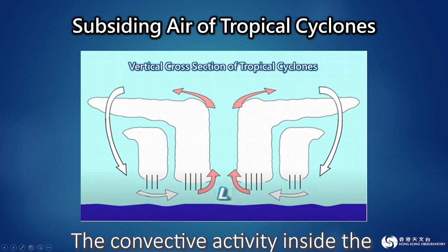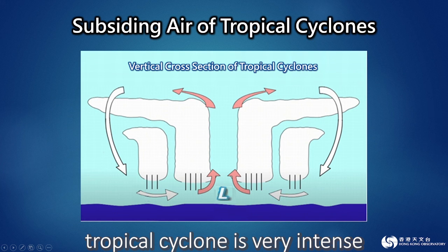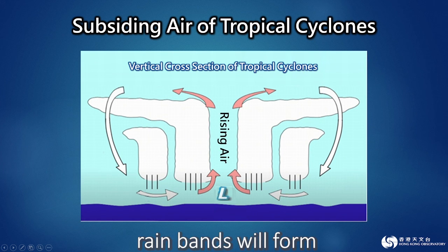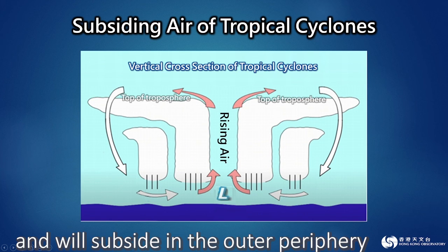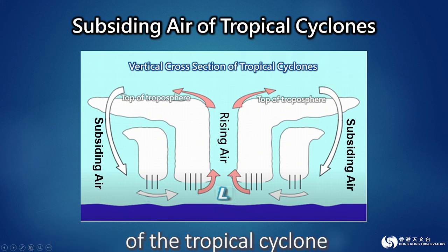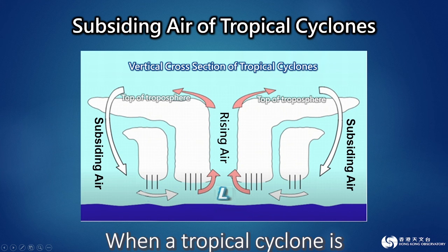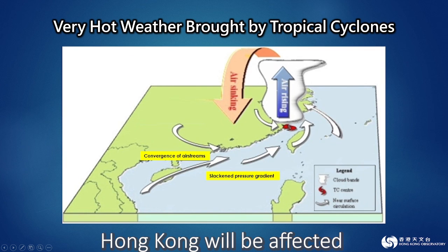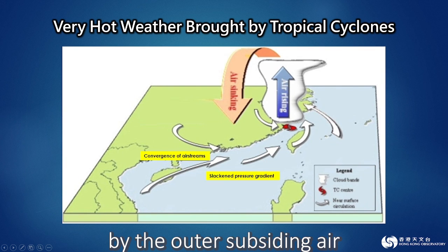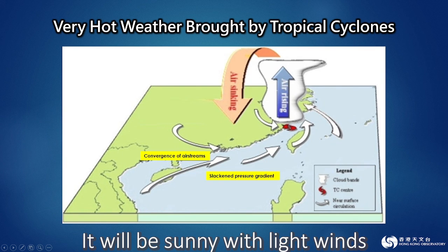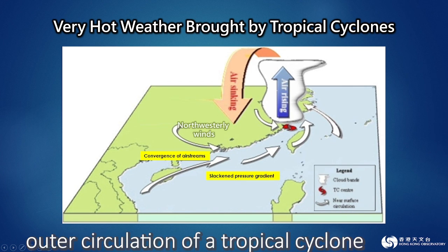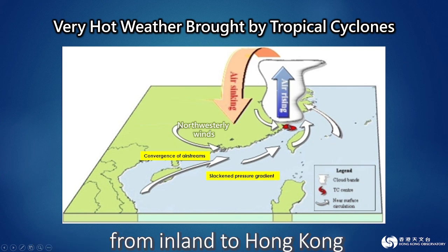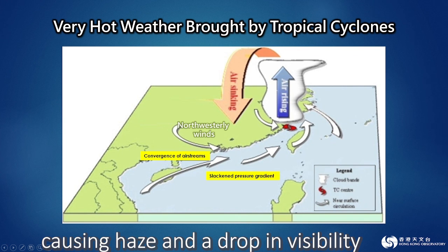The convective activity inside the tropical cyclone is very intense. When the air rises, rain bands will form. When the air rises to the top of the troposphere, it will flow outward and will subside in the outer periphery of the tropical cyclone. When a tropical cyclone is located near Taiwan, Hong Kong will be affected by the outer subsiding air. It will be sunny with light winds resulting in very hot weather. Besides, the northwesterly winds in the outer circulation of a tropical cyclone will also bring suspended particulates from inland to Hong Kong, causing haze and a drop in visibility.